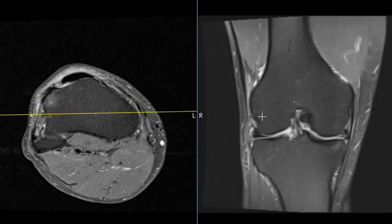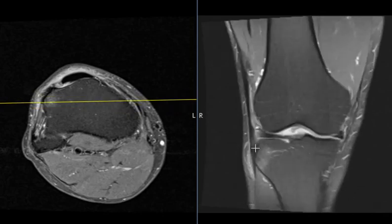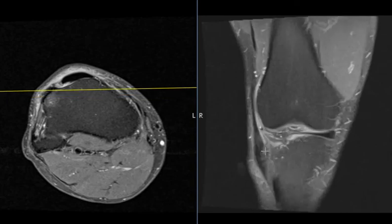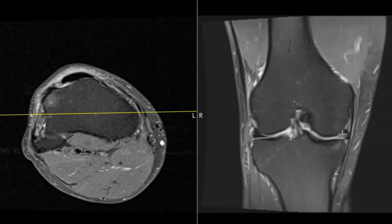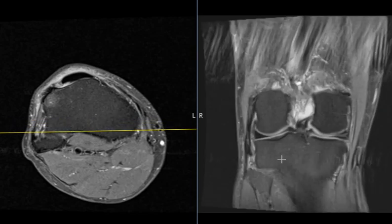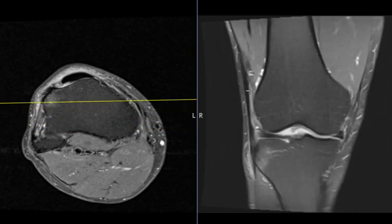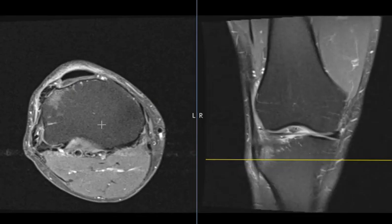So this is related to iliotibial band friction syndrome from jogging. Normally we just see fluid and inflammation in this area, but it's much more rare to see the inflammatory changes where the iliotibial band attaches to Gerdy's tubercle. He also has some abnormal signal in his meniscus, which is for another video. So he's got evidence of ITB friction syndrome and some hypertrophic tendinopathy or inflammation of this distal iliotibial band with reactive marrow edema on Gerdy's tubercle. Thank you so much.